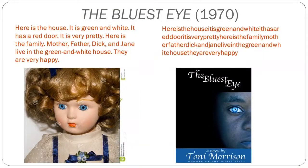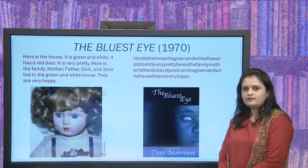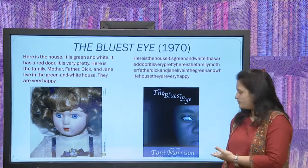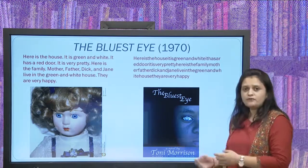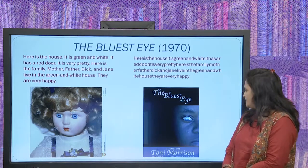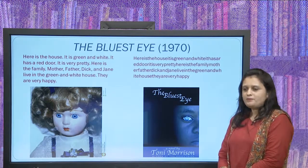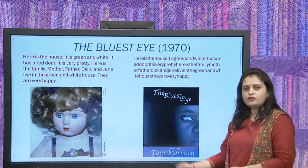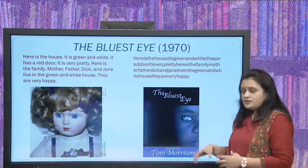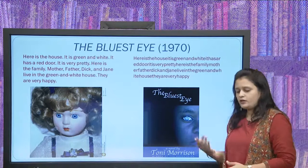Here is Pecola, the main character of the novel, pictured alongside a white doll with blonde hair, blue eyes, white skin, and red lips — perfect by white standards. The cover of Toni Morrison's The Bluest Eye shows a Black girl of African American descent who, when compared to the white doll, is not considered pretty by those standards. Yet she has blue eyes — a phenomenon that will develop further in our presentation.